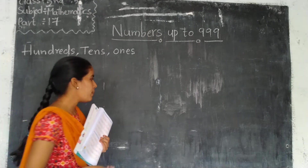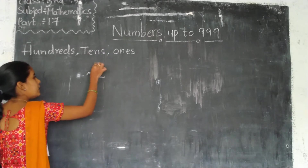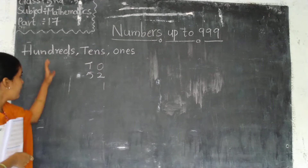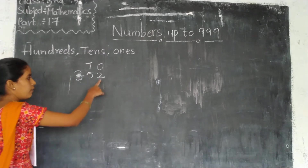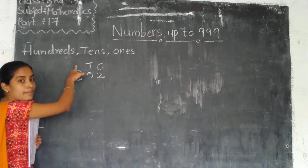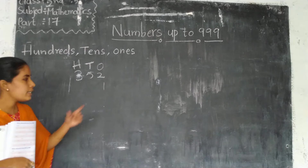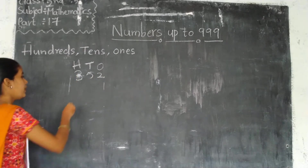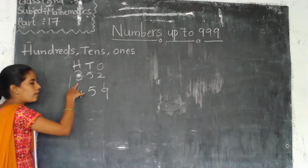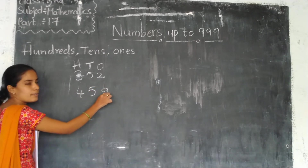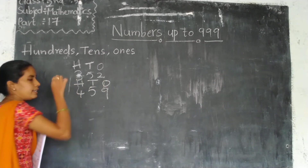In the 2-digit numbers, for example 52, we have only two place values — ones and tens. But here we have three digits, so we are adding one more place value. Ones, tens, and what is the next place value? This is hundreds. So the order is: ones, tens, hundreds. Always we start from right to left: ones, tens, hundreds.